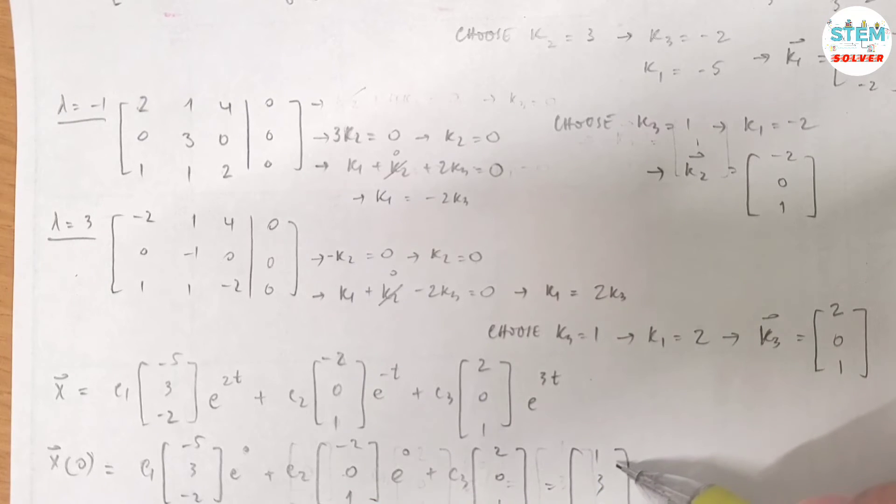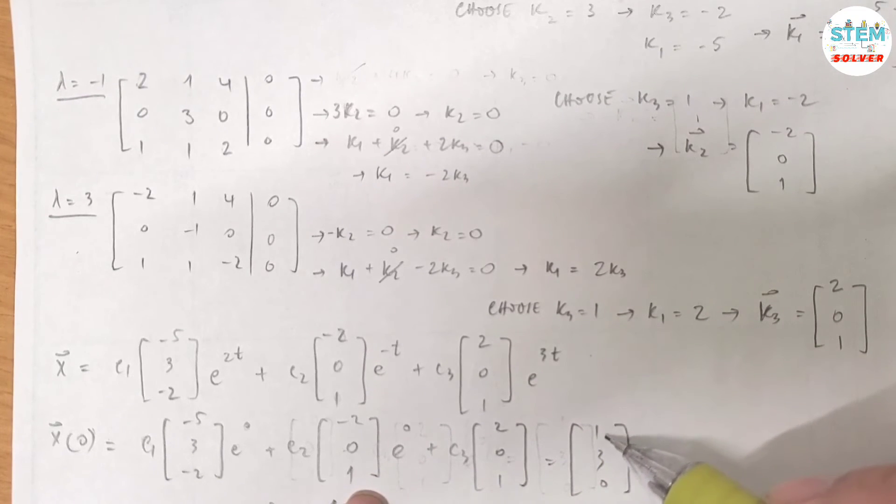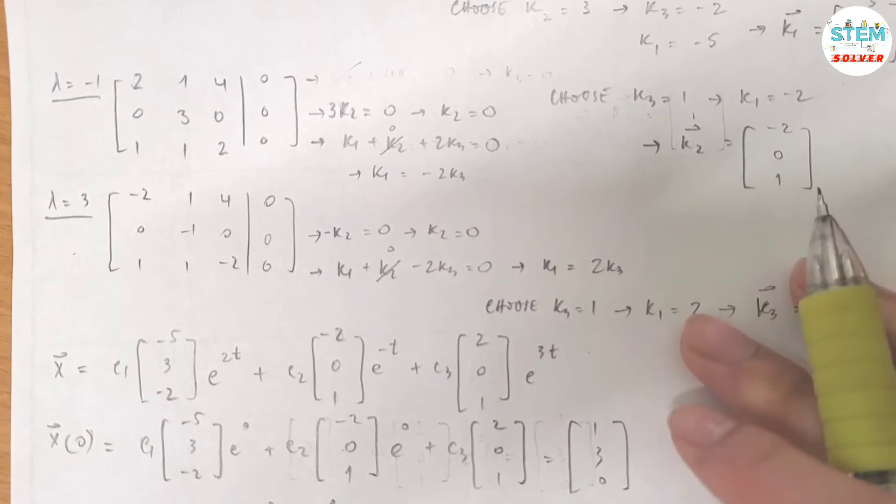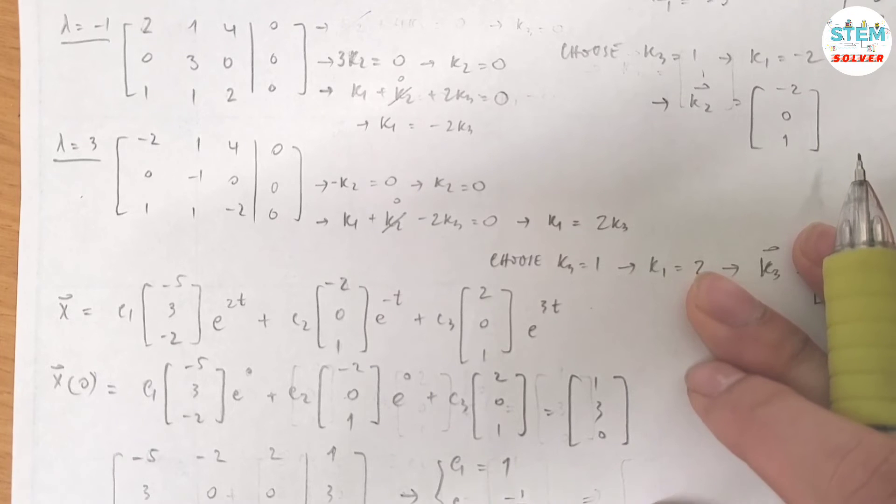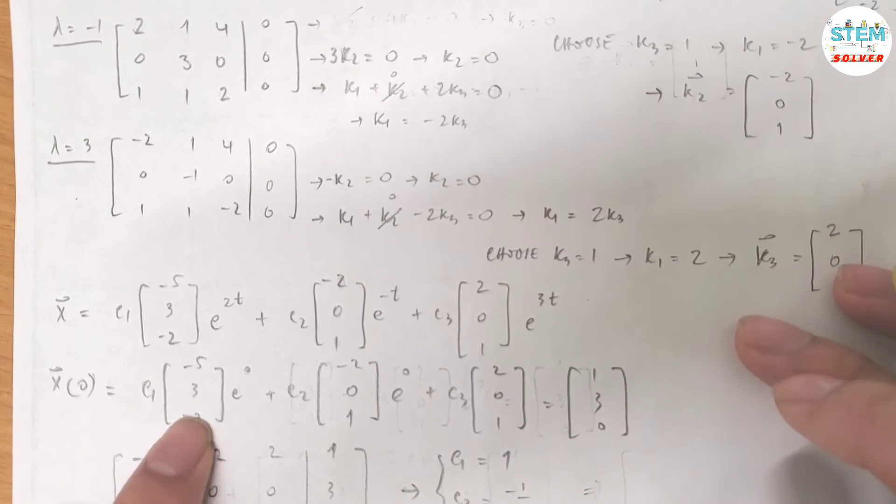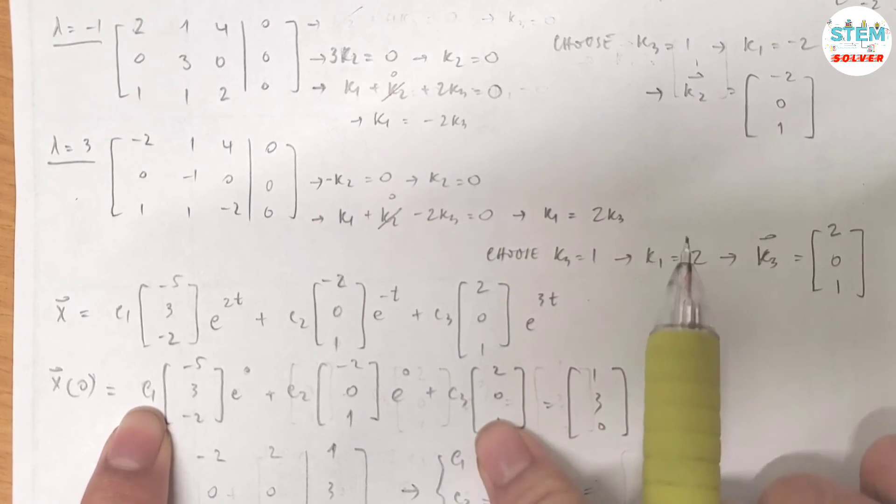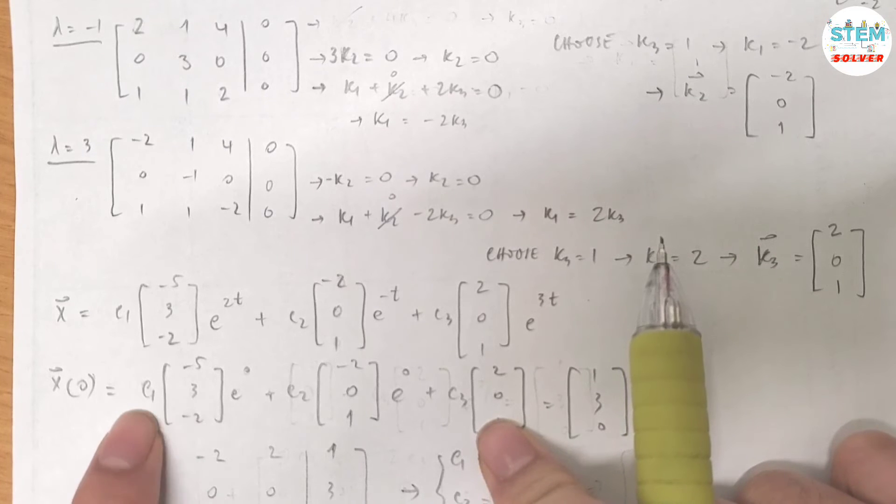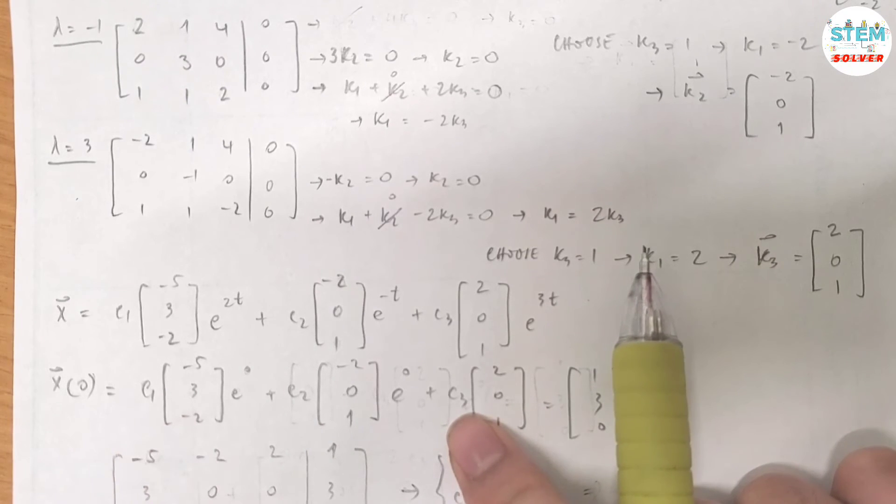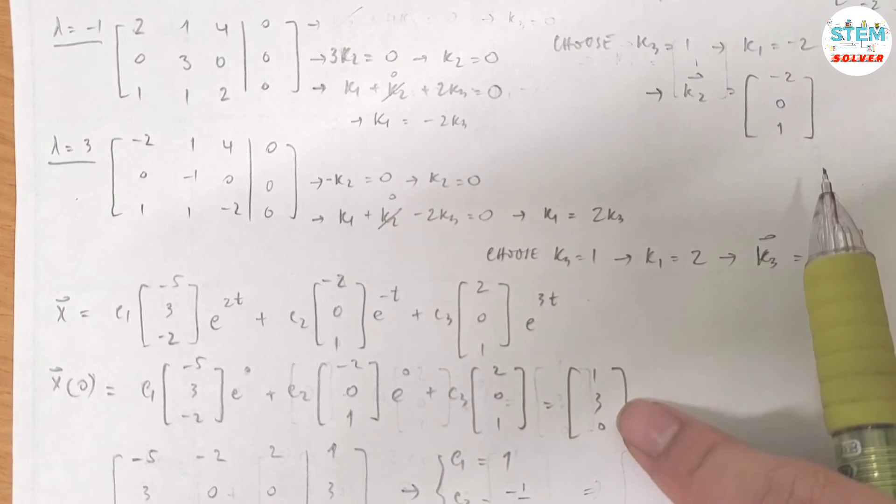And that equals [1, 3, 0]. As you can see, imagine c₁, c₂, c₃ is like your x, y, z. So if I put it into a matrix and augment it with [1, 3, 0], for this matrix I will get c₁, c₂, c₃.